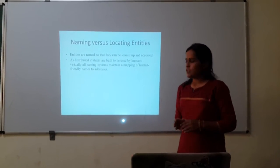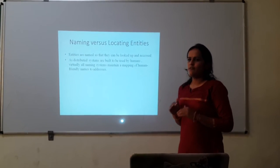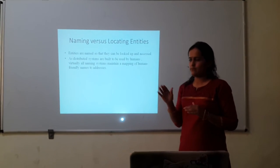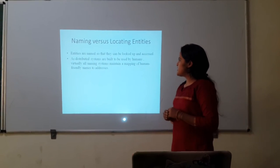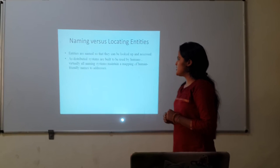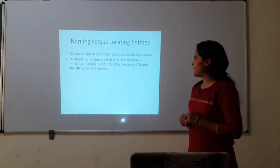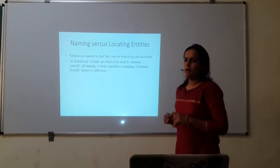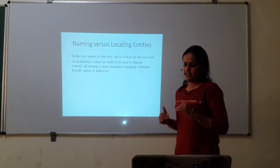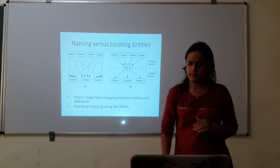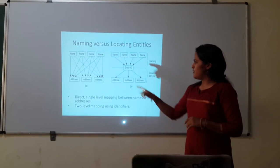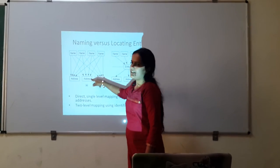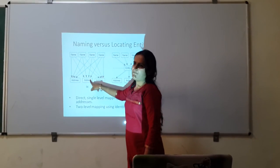Entities are named so that they can be looked up and addressed. We look up for entities through its names. As distributed systems are built to be used by humans, virtually all naming systems maintain a mapping of human friendly names to its addresses. Now the figure first shows direct single level mapping between name and addresses. It is directly mapped to the addresses.